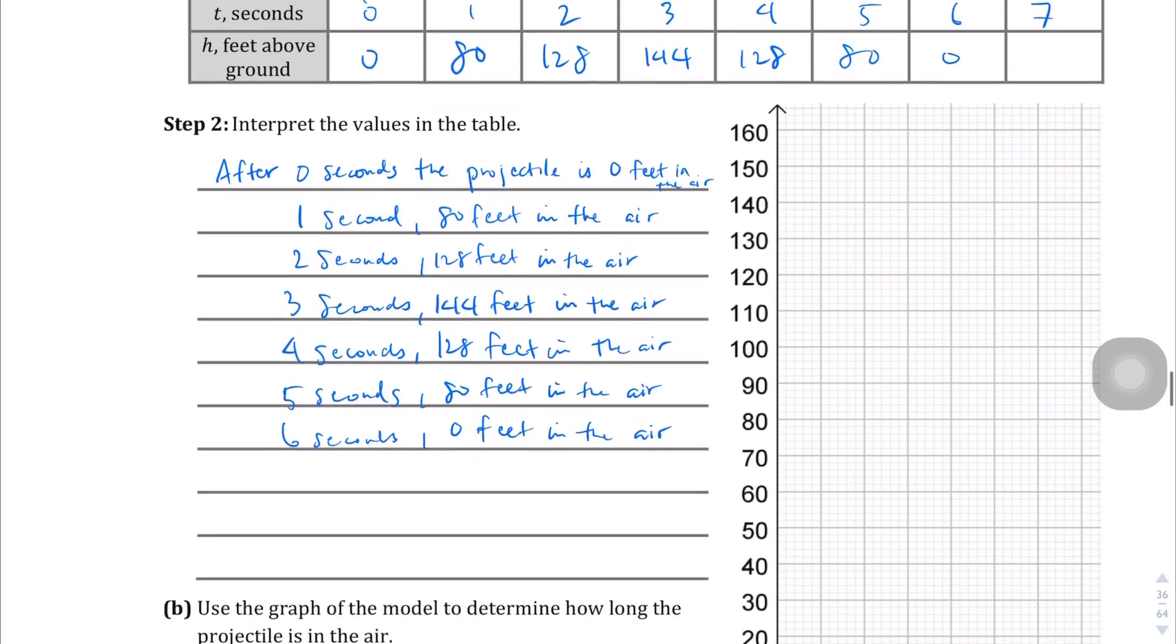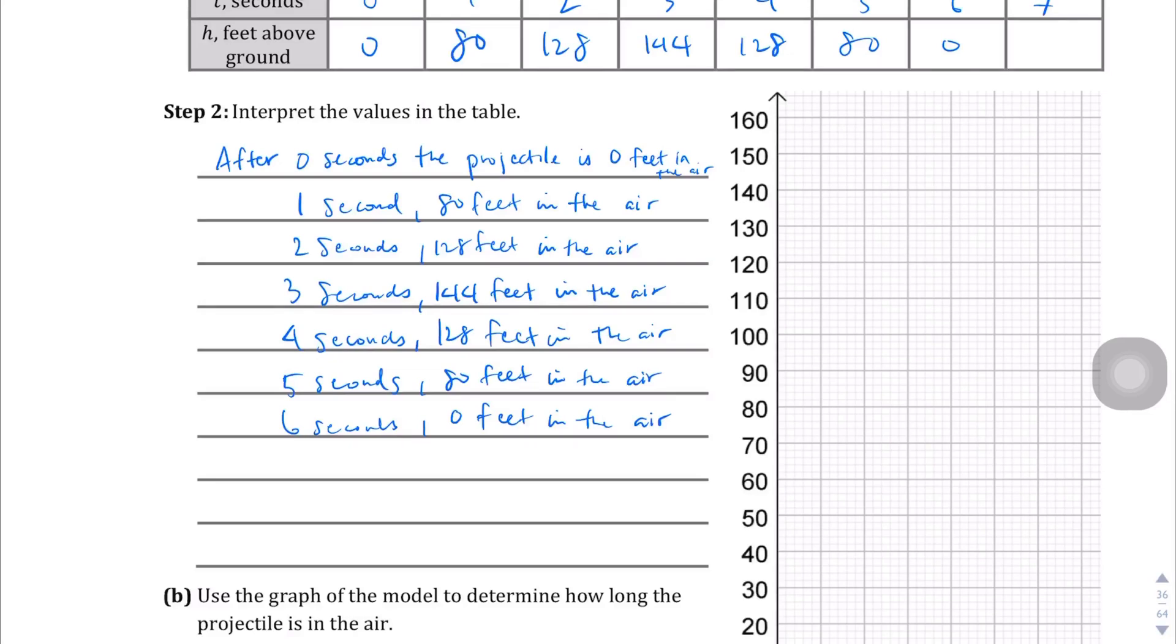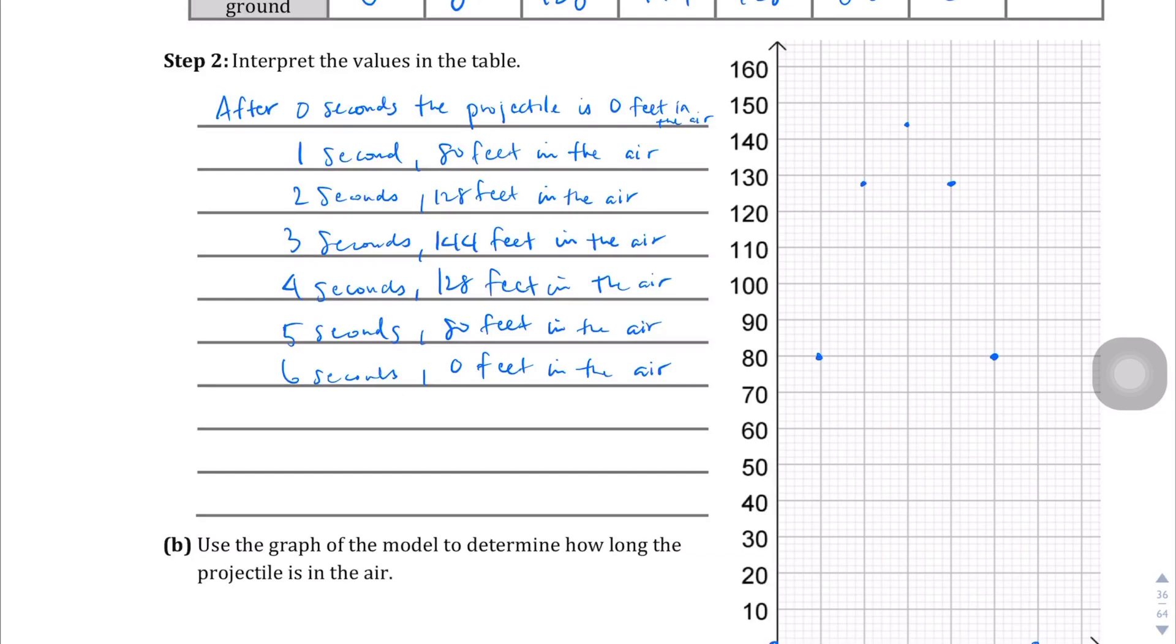Let's graph this. 0, 0 is right here. 1, 80 is right there. 2, 128 is almost at 130, but not quite, it's right there. After 3 is at 144, so almost halfway up. And coming back down. And right here. And then at 0. And it's 6. I'm just going to butcher this curve. Something like that.